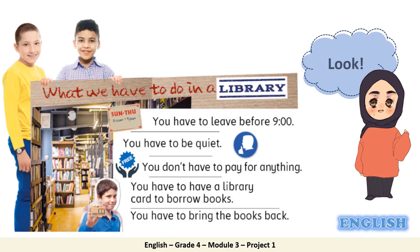Now, look at the text in front of you. What type of text is it? Are there paragraphs? As you can see, there are no paragraphs. There are sentences, and each sentence is on a line. Also, as you notice, there are pictures and there is a title. What do we call this text? We call this a poster. And people do posters to give information about something.